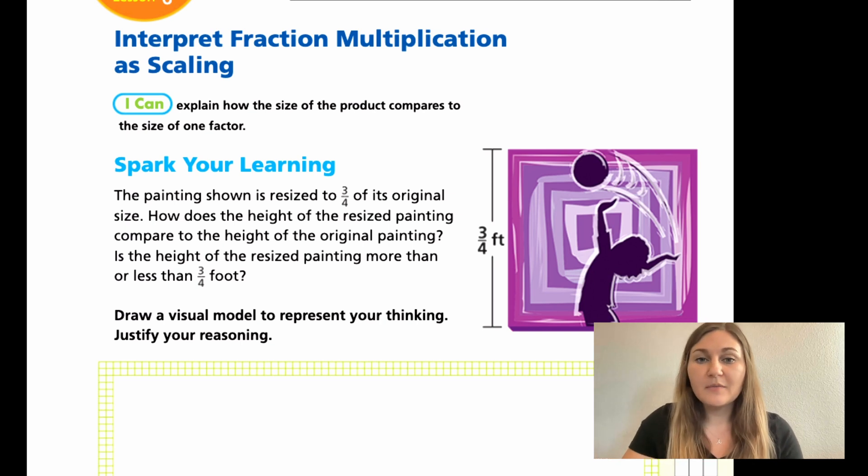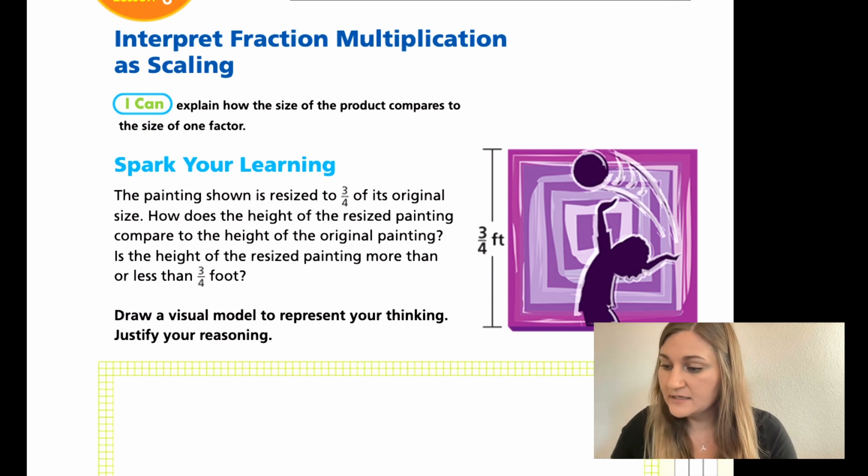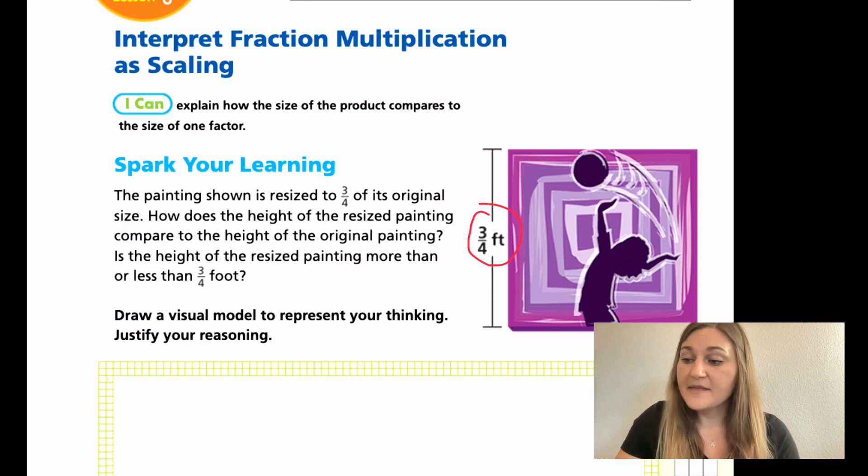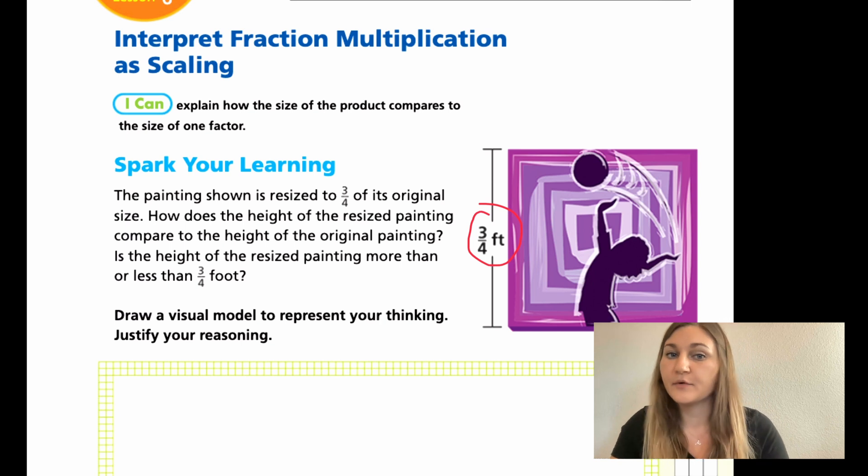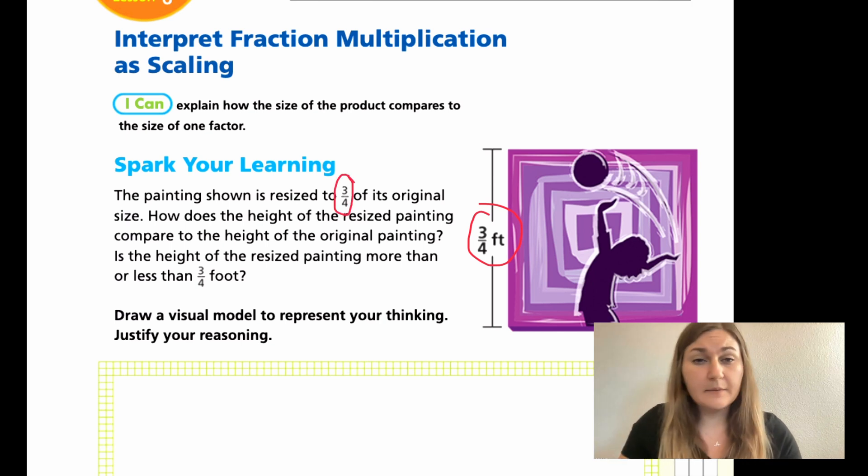For this problem, unfortunately, we are dealing with two three-fourths and they are being used for different things. They aren't the same thing. So the height is three-fourths of a foot, and then the problem is saying that the sizing is three-fourths of three-fourths of a foot. So that does make it a little complicated, but I'll try to be as clear as possible and I'll go through step by step.